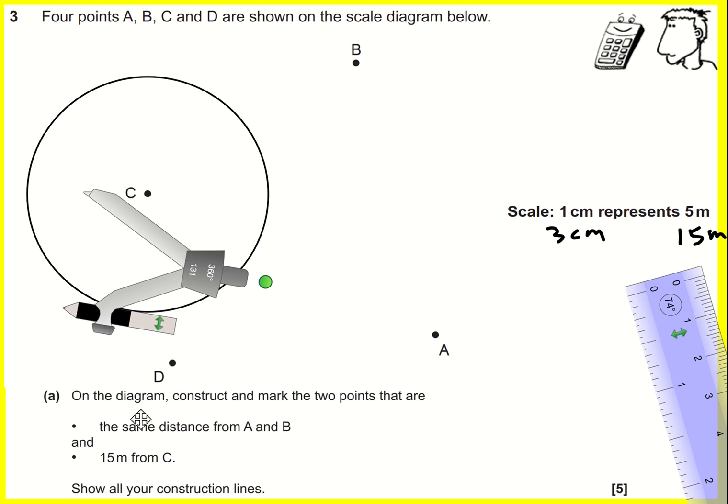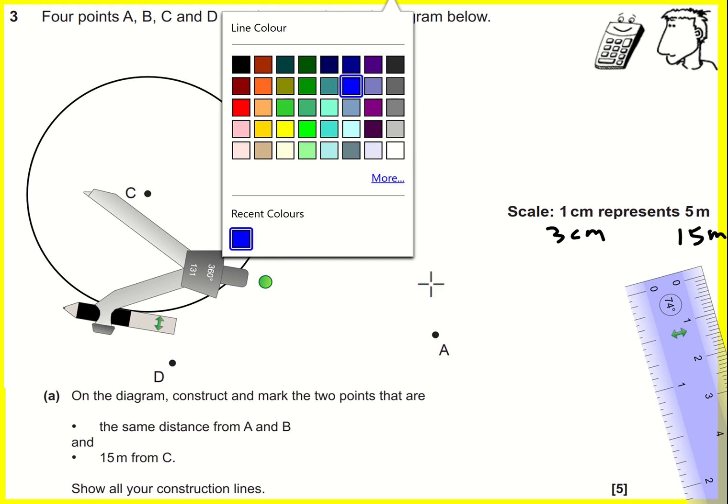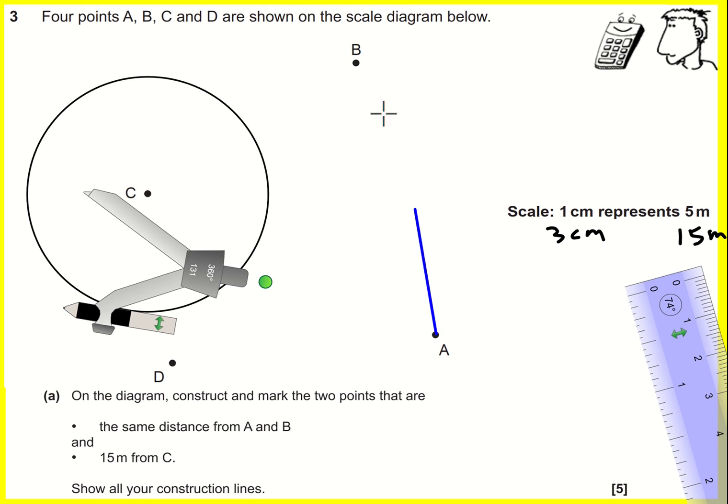Then we want the points at the same distance from A and B. To do this we need a line that goes exactly through the middle, it's actually the perpendicular bisector of A and B. I'm going to draw the line from A to B, then it's a bit more standard how to draw the perpendicular bisector.